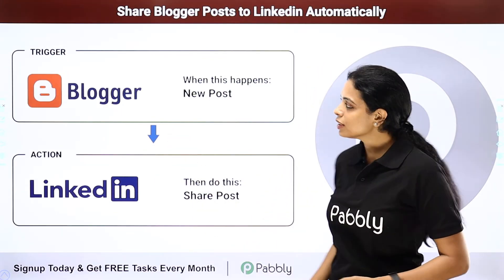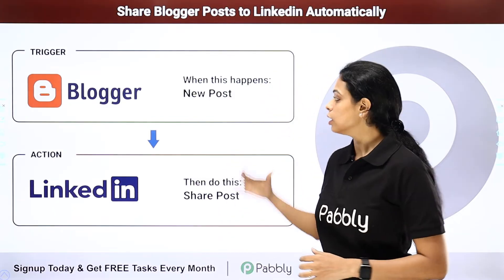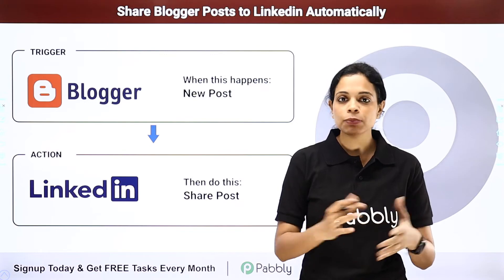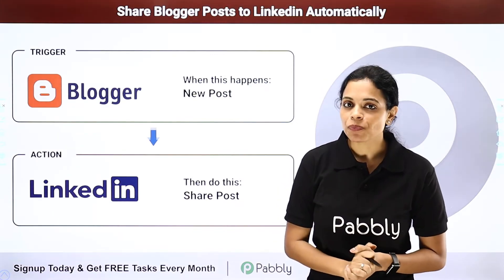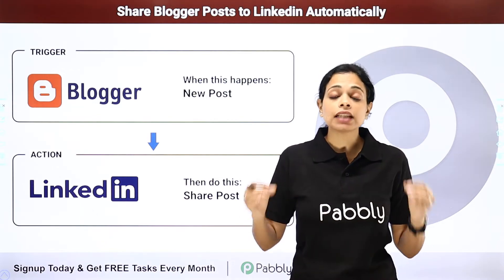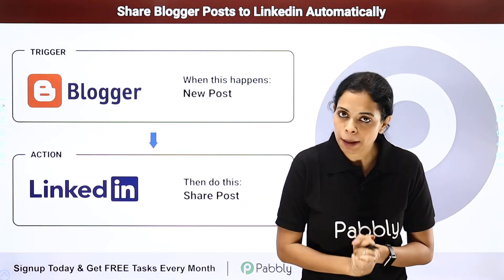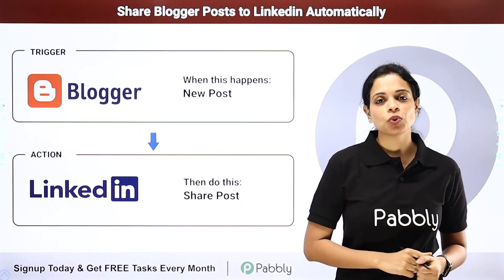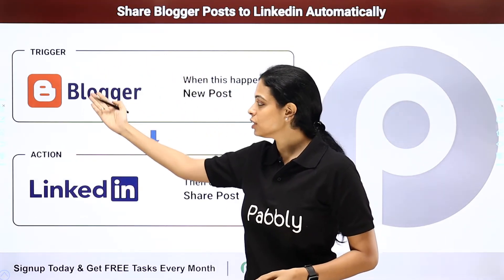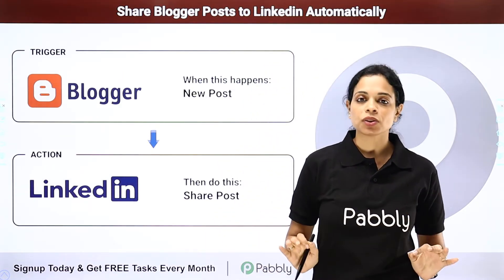The last one is — suppose you are a blogger and you have a new post on Google Blogger. You want the same post to be shared on LinkedIn. If not the entire post, at least the link — anything like that can happen by integrating these two applications. Just make sure trigger application is Blogger and action application is LinkedIn, and you are sorted.